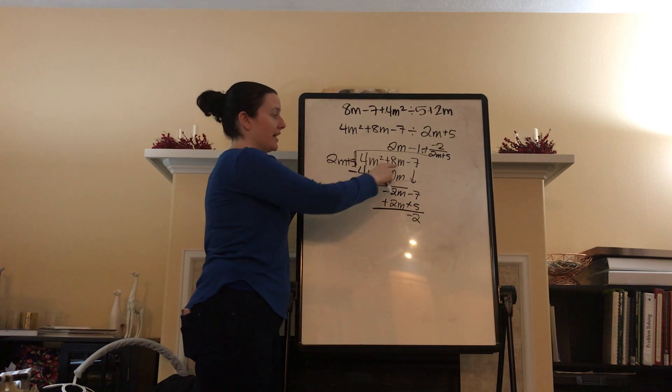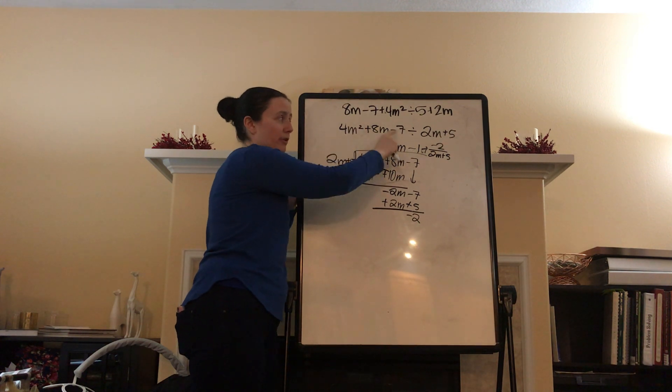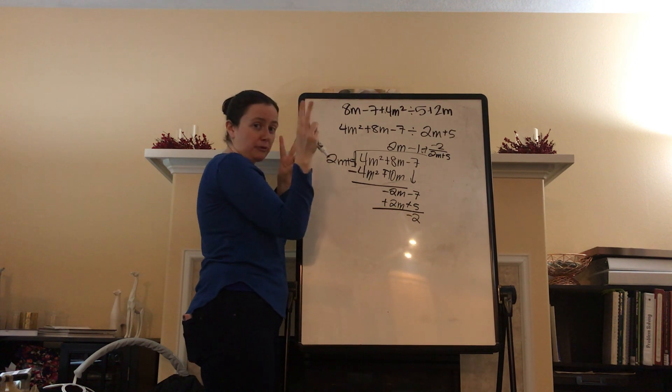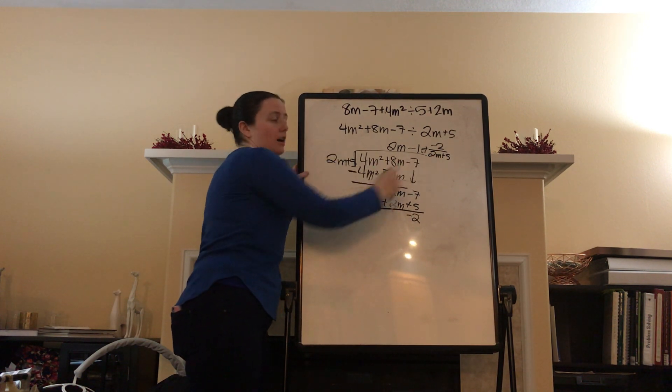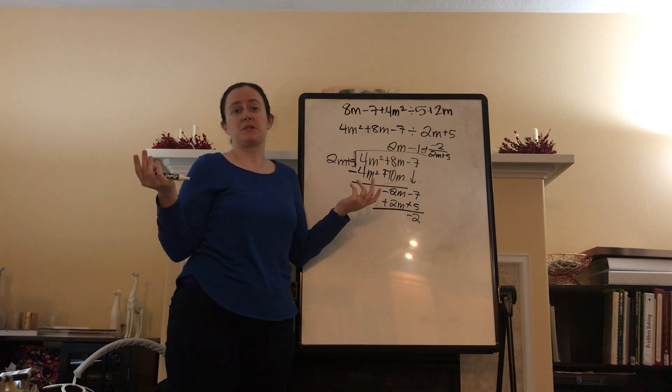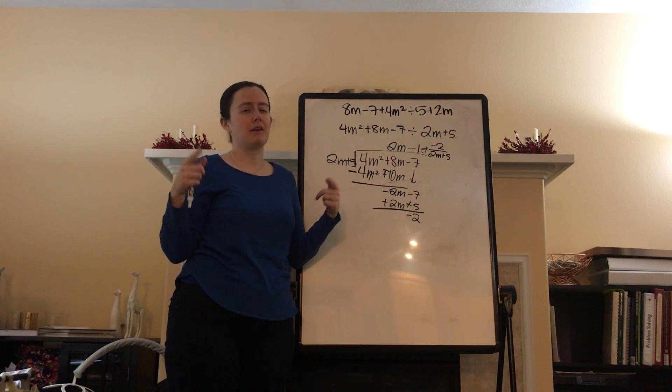So, when we divide these two things, make sure you have the order correct. Then, if you get a remainder, no big deal. Take your leftovers and put them on top of the divisor. You've got yourself a fraction. Pretty simple. Not that hard. I think you can handle it.